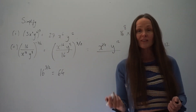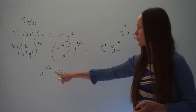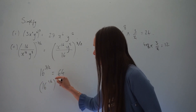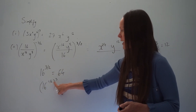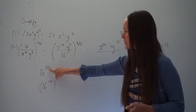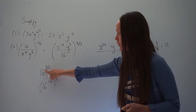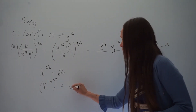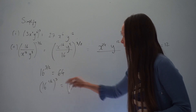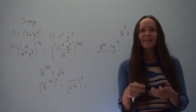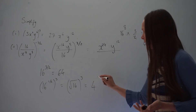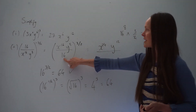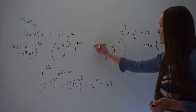To work this out without a calculator: rewrite 16 to the power of 3 over 2 as 16 raised to the power of a half, then all cubed. Raising to the power of a half is the same as square rooting. So the square root of 16 is 4, since 4 squared is 16. Then cubing 4 gives you 64. So the final answer has x to the 24, y to the 12, all over 64.